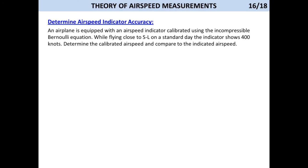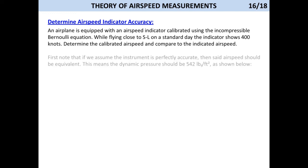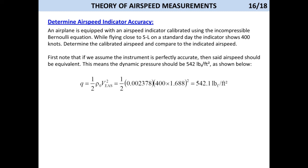Let's do another example. An airplane is equipped with an airspeed indicator calibrated using the incompressible Bernoulli equation. While flying close to sea level on a standard day, the indicator shows 400 knots. Determine the calibrated airspeed and compare to the indicated airspeed. First note that if we assume the instrument is perfectly accurate, then said airspeed should be equivalent. This means the dynamic pressure should be 542 pounds per square foot, as shown below.